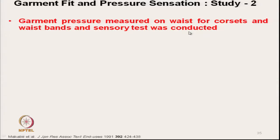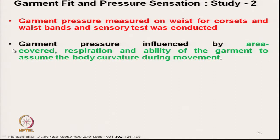In Study 2, garment pressure was measured on the waist for a corset and waistband. A sensory test was conducted on the sensation of pressure. It was observed that garment pressure is influenced by area covered, respiration, and the ability of the garment to assume body curvature. A higher area covered gives lesser pressure, and the respiration level also plays a role.